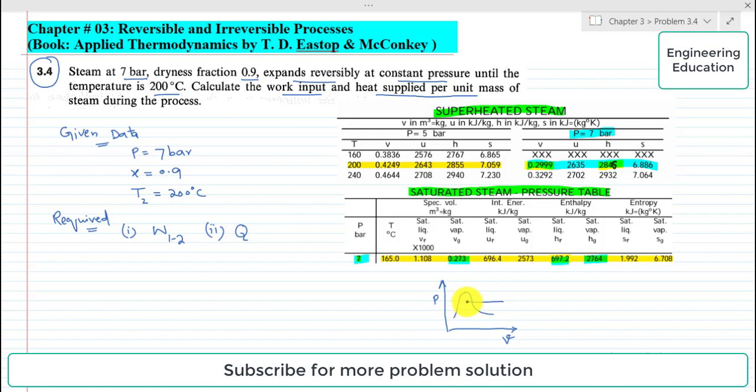Expansion starts from this point. Suppose this is 0.1 and this is 0.2. So at 1, we have different properties - the state is in the mixture region, while state 2 is in the superheated region.